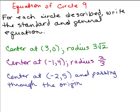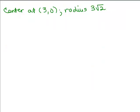The directions are to find, for each circle described, write the standard and general equation for that circle. So, here's the first one. We have a center at 3, 0 and a radius of 3 square roots of 2. So, remember this is H, this is K, and this is R, our radius.